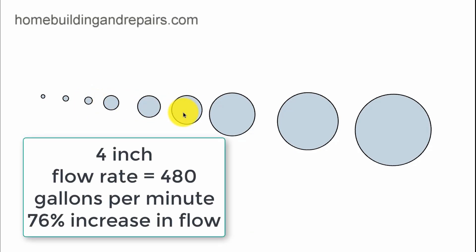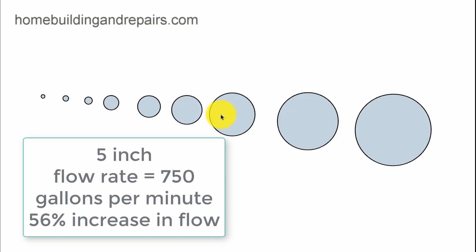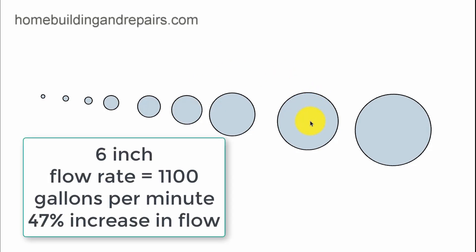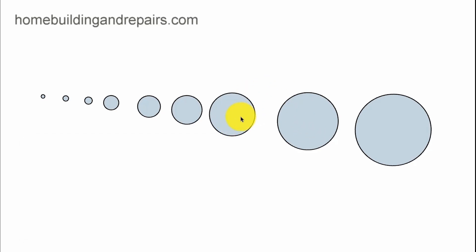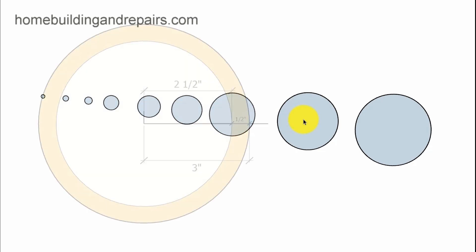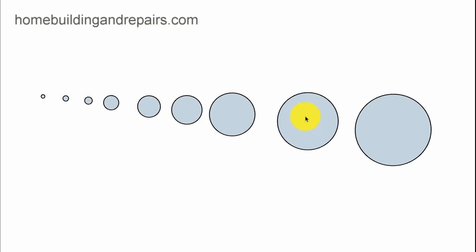When we go to the 4-inch pipe, it is producing 480 gallons per minute, a 76% increase between the 3-inch to the 4-inch. If we go to the 5-inch, we now have a 56% increase between the 5-inch and the 4-inch. The 5-inch produces 750 gallons per minute. When we jump over to the 6-inch, we are producing 1,100 gallons per minute of water and a 47% increase from the 5-inch size pipe. Almost half more water is flowing through a pipe that's only 1-inch in diameter larger. It's just hard to even imagine.